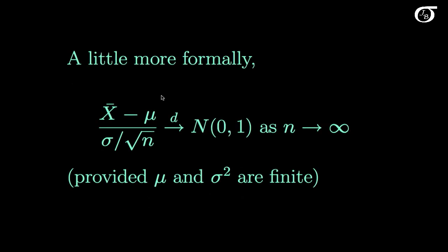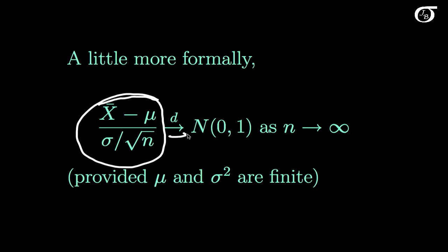A little more formally, we say that the standardized quantity — X-bar minus mu over sigma over the square root of n — has a distribution that tends to the standard normal distribution as the sample size goes off to infinity. A couple of technical restrictions: we need a finite mean and variance, but that is usually the case for the things we're dealing with.